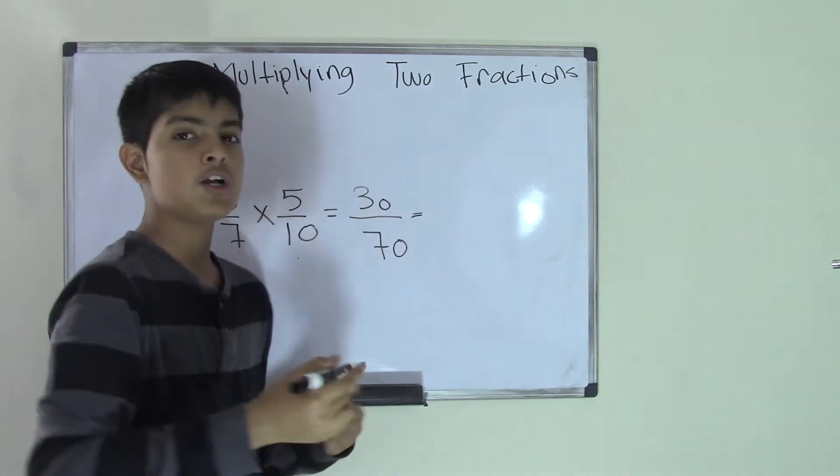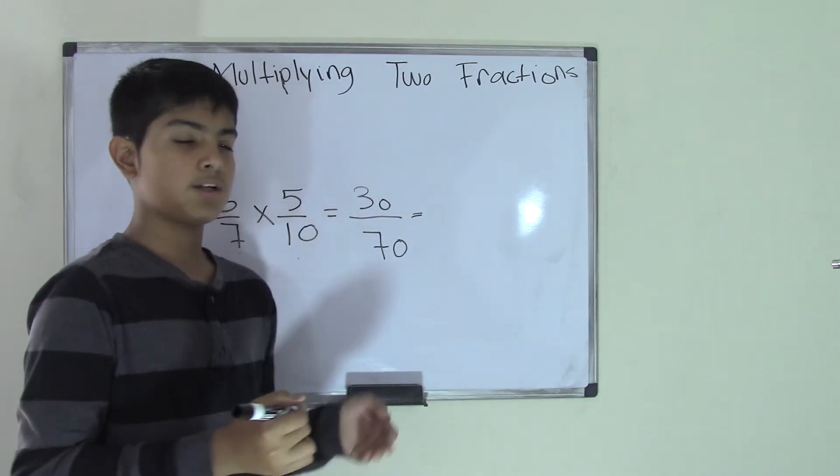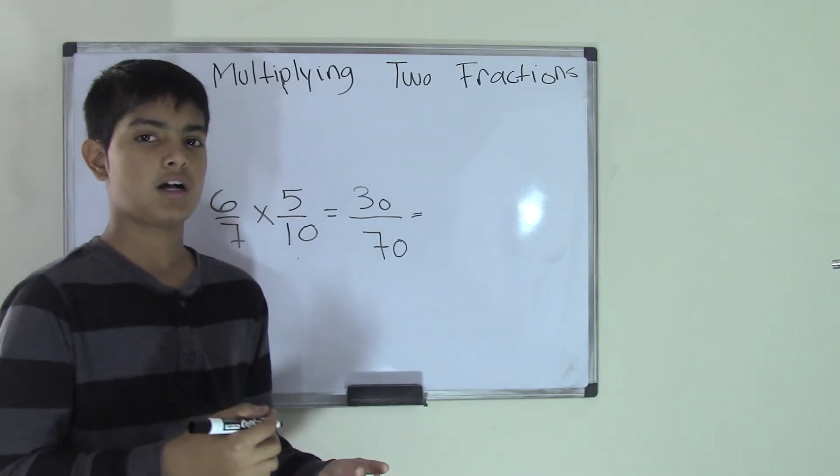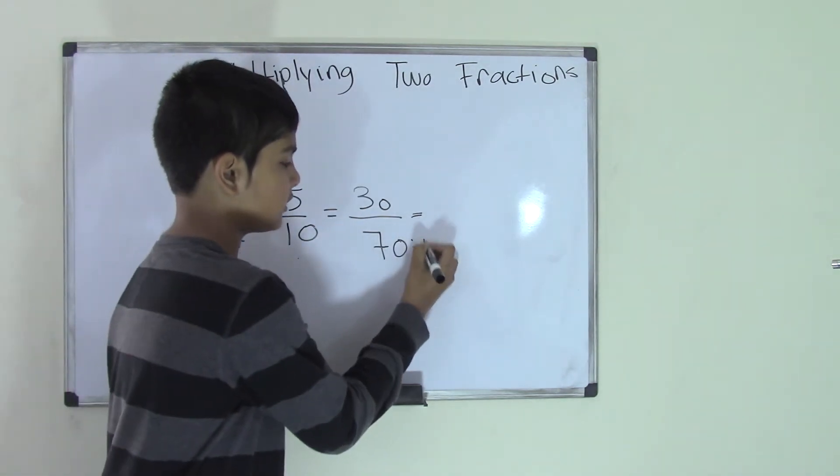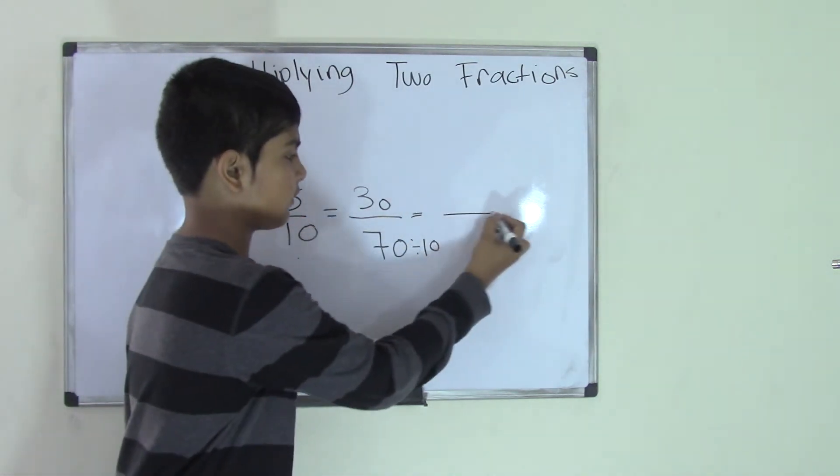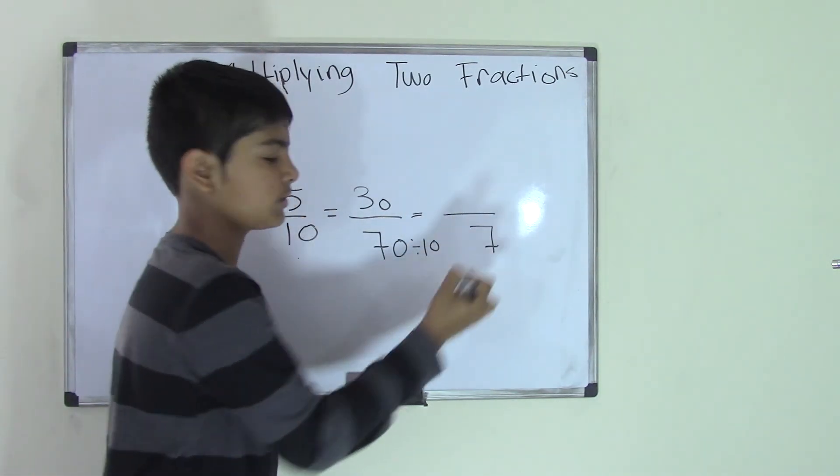How do we do this? Well, we have to divide both the numerator and the denominator with the same number. So right now, I'm going to divide them with 10. So I'm going to divide the denominator with 10. So 70 divided by 10, and that will be turned into a 7.